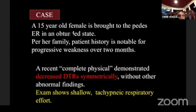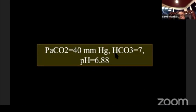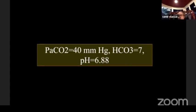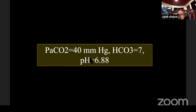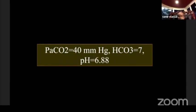Case 7: A 15-year-old female with obtunded state, weakness over two months, decreased deep tendon reflexes, and reduced respiratory effort. Arterial CO2 is normal, HCO3 dropped to 7, pH dropped to 6.8 — metabolic acidemia (HCO3 and pH moving in parallel). HCO3 dropped by 17 mEq/L; expected CO2 compensation: 17 times 1.2 equals about 20 mmHg drop, so expected CO2 should be about 20 mmHg. But the measured CO2 is 60 mmHg — the patient is suffering from combined metabolic acidosis and respiratory acidosis.